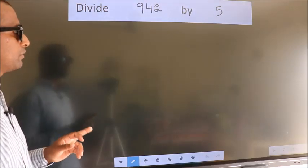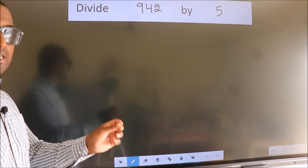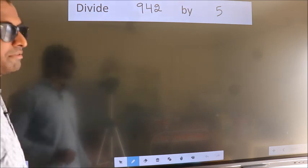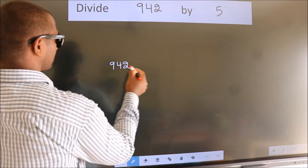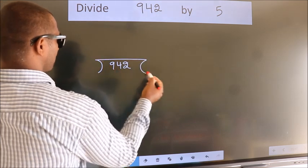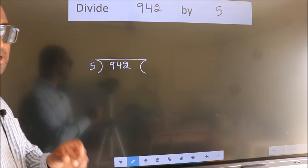Divide 942 by 5. To do this division, we should frame it in this way: 942 here, 5 here. This is your step 1.